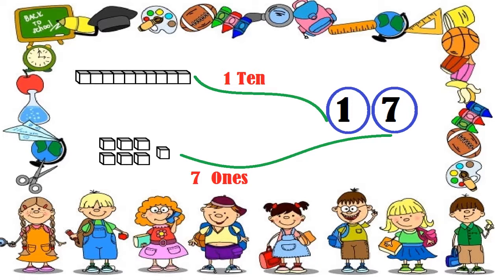Similarly, to get 17, we need to start in the tens place. So here is 10. Now we have 1 in the tens place. But we still need the blocks for the ones place. In the ones place, we have 7 of the ones blocks.